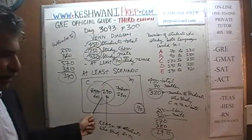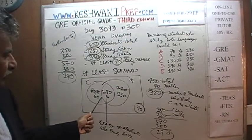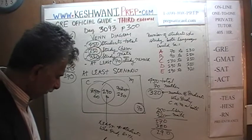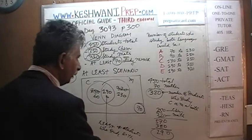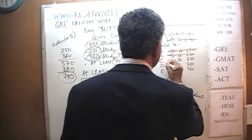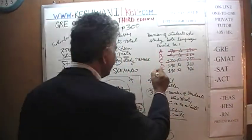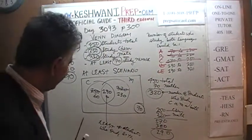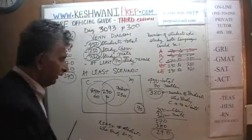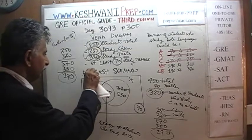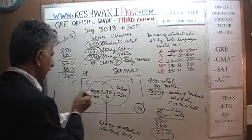The correct answer must start with 190. We can immediately rule out A, B, and C. The answer has to be either D or E. Now let's do the at-most scenario.